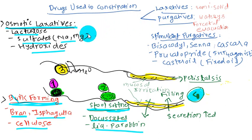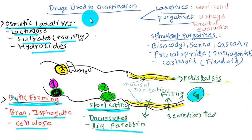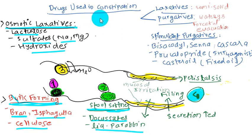Today we are going to talk about the drugs used in constipation, which is a very common problem. First of all, how does constipation occur? It can be due to inadequate fiber intake, inadequate fluid intake, inadequate exercise, or immobility in our daily life. These factors can cause constipation.